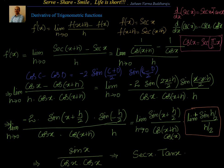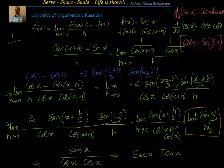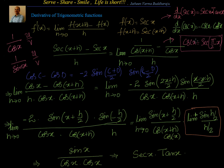Is there any other way we can find the derivative of secant x and cosecant x? Yes — for secant x, take 1 by cos x as a u by v form. Or for cosecant x, take 1 by sin x as u by v form. Check it out — you should get the same values: secant x tan x, and minus cosecant x cot x.